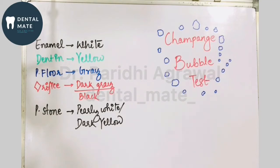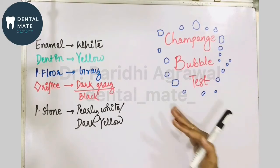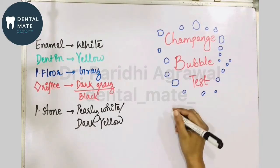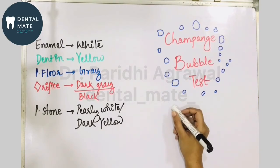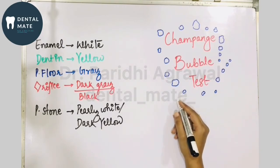First of all, let us talk about the champagne bubble test. This test can be used as a diagnostic test to find out the orifices present in the pulp floor. What happens is, in this test, whenever you are placing the sodium hypochlorite irrigant in the pulp chamber...